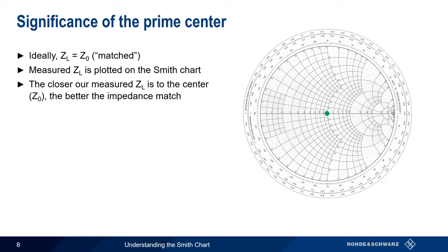If our measured load impedance falls on the center of the Smith Chart, Z sub L equals Z sub zero, and we have a perfect match.